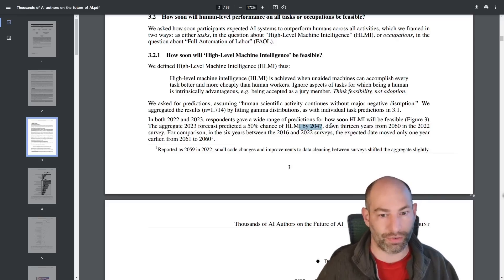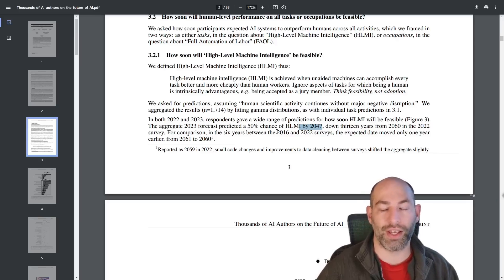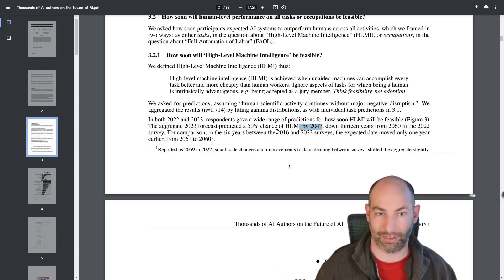That is an exponential difference. For comparison, in the six years between 2016 and 2022, the survey's expected date moved only one year earlier. So again, from 2016 to 2022, the prediction only revised down one year from 2061 to 2060. But then in just a single year, 2022 to 2023, it revised down 13 years. So as people have observed, the human predictions are exponentially decaying now.